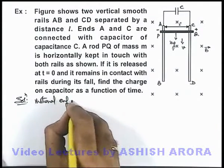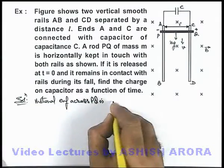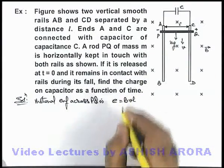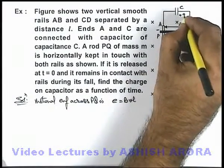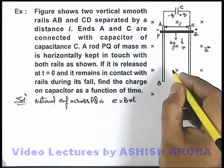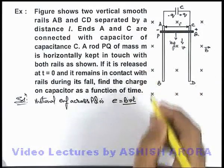Motional EMF across PQ is, this we can directly write as Bvl, if v is the instantaneous speed of the rod, due to which the capacitor will attain a charge plus and minus q on its plates, which is due to the potential difference Bvl across the capacitor.